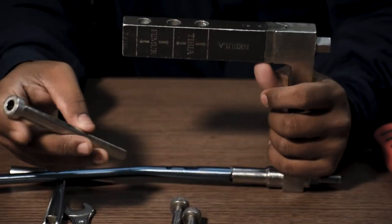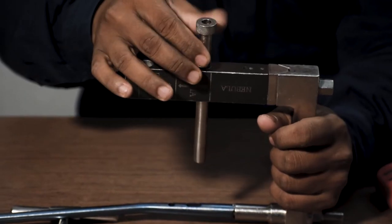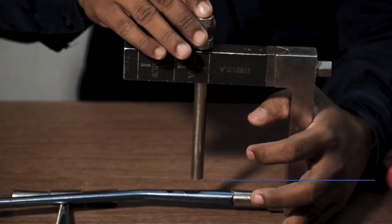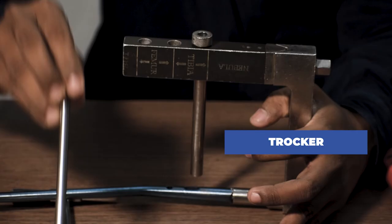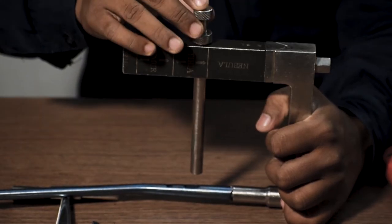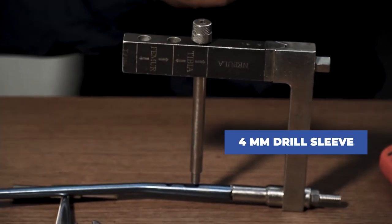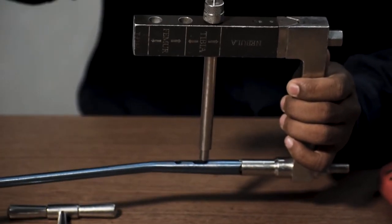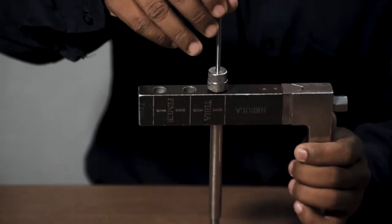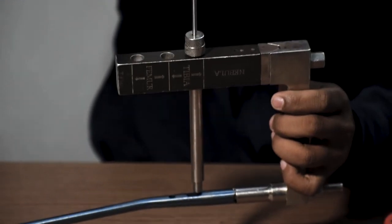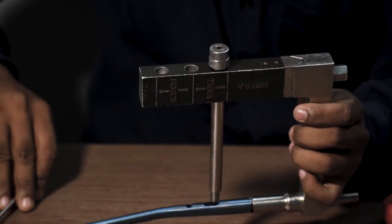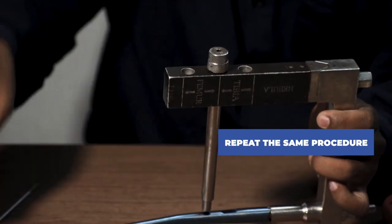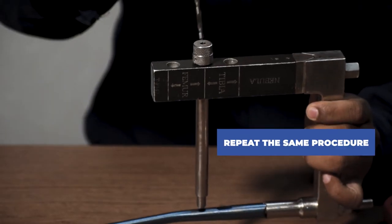Now in order to test, first protection sleeve is inserted. After that a trocar is inserted through the protection sleeve. Then the trocar is removed and the 4 mm drill sleeve is inserted in the protection sleeve. After that, a 4 mm drill bit is used to drill through the hole. This is how the tibia jig is checked to see that it is working perfectly fine. The drill bit is going through and there is no obstruction. Now the same procedure is used to check all the other holes.